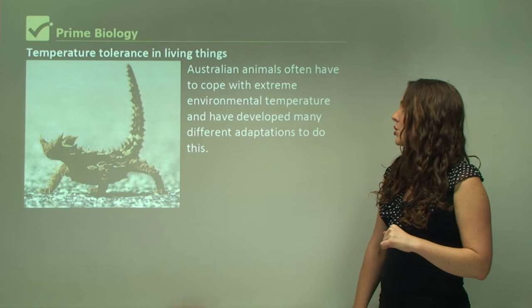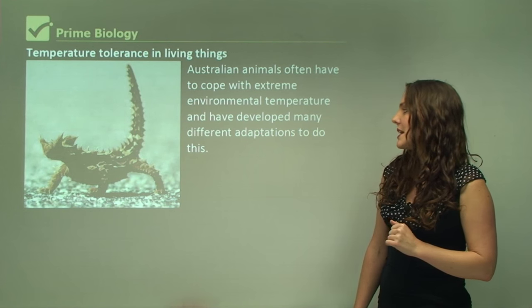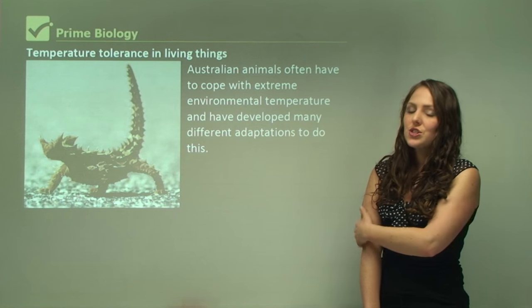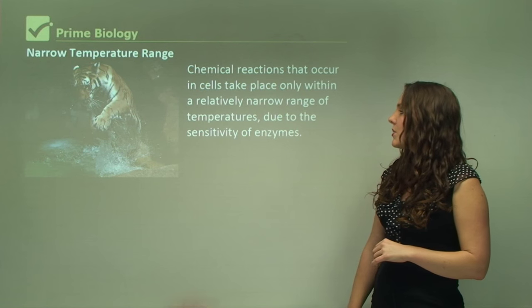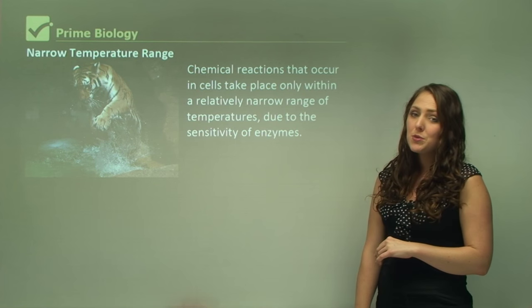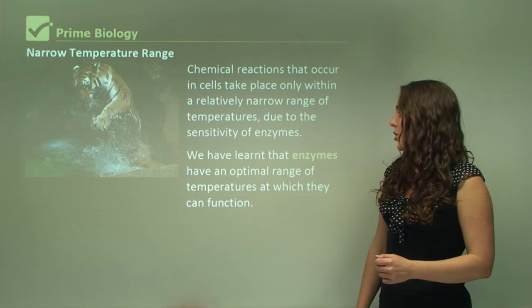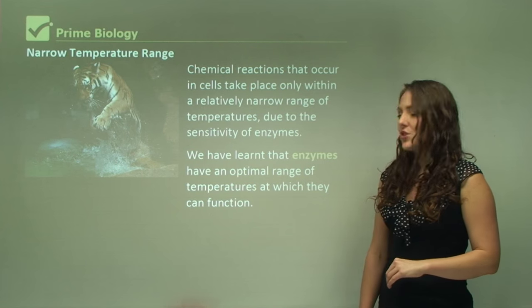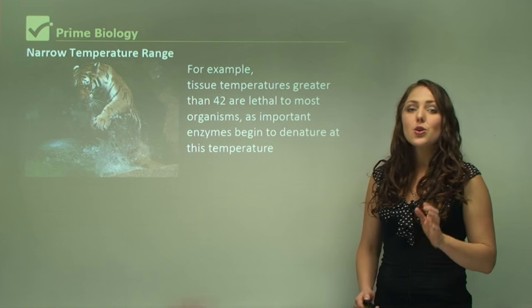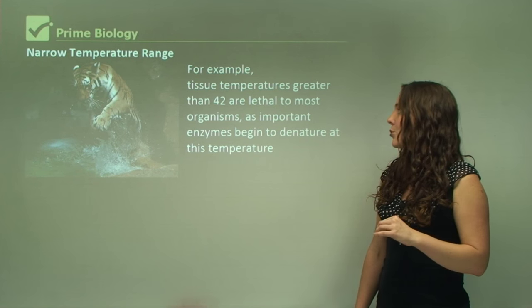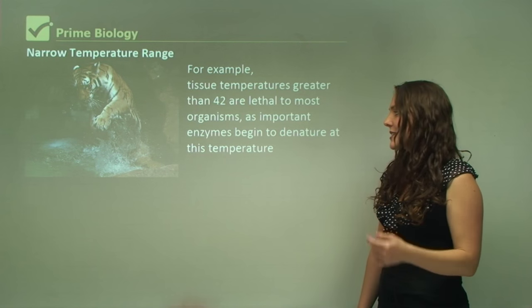Australian animals often have to cope with extreme environmental temperatures and have developed many different adaptations to do this. Chemical reactions that occur in cells take place only within a relatively narrow range of temperatures due to the sensitivity of enzymes. Enzymes have an optimal range of temperatures at which they can function. For example, tissue temperatures greater than 42 degrees Celsius are lethal to most organisms as important enzymes begin to denature at this temperature.